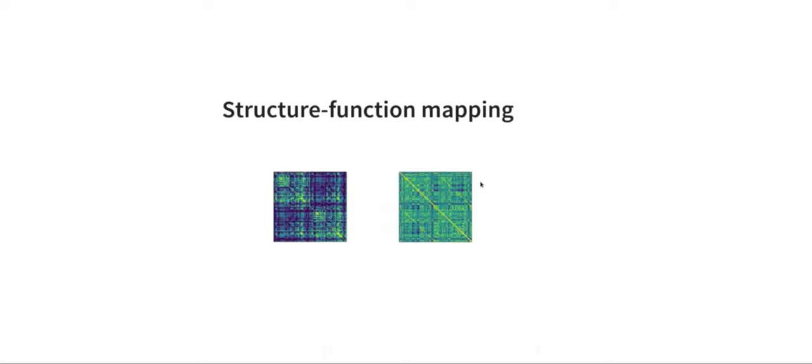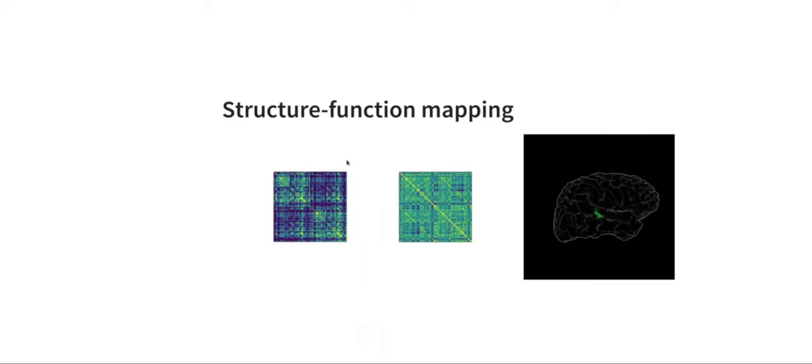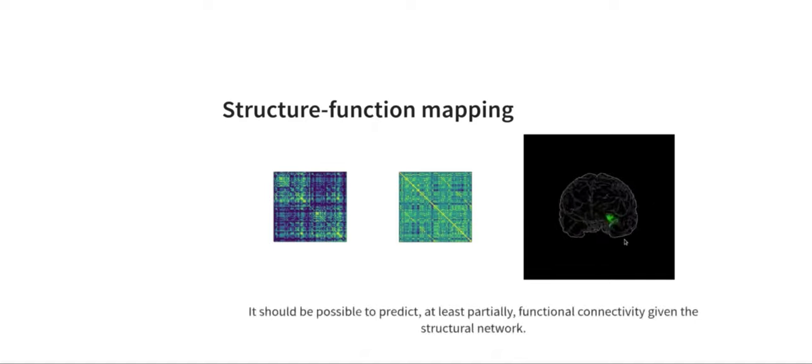So now we have two pairs of matrices which are two views on the same network. What do we do with those? One avenue, one application, is to try to predict one from the other. If we assume that the structure, to make an analogy, corresponds to roads, then function would be the cars that are moving along that road. In some sense, function constrains structure. This is a representation you're seeing animated here: we see information flowing through the different connections of the brain to transfer information between regions. So there's hope that we can predict, at least partially, functional connectivity given the structural network.